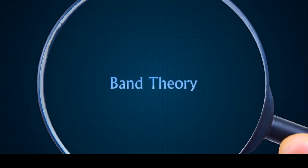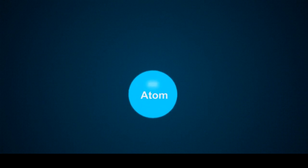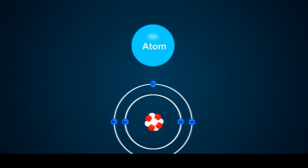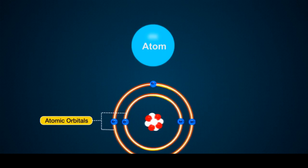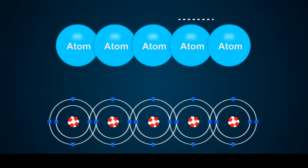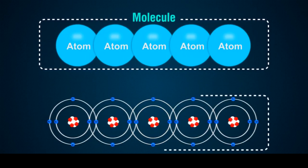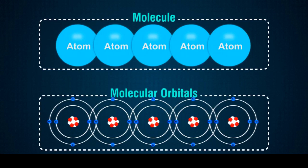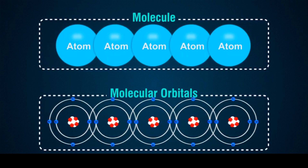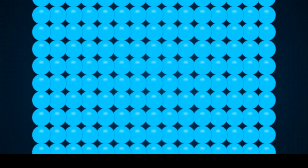Let's take a dip into the band theory to understand it further. The electrons of a single isolated atom occupy atomic orbitals. Each orbital forms a discrete energy level. When multiple atoms join together to form a molecule, their atomic orbitals combine to form molecular orbitals, each of which forms at a discrete energy level. As more atoms are brought together, the molecular orbitals extend larger and larger and the energy levels of the molecule will become increasingly dense.